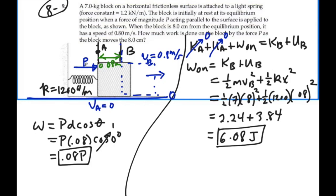So the total work done is 6.08 joules. And that is actually the work done by P because that is the only external force that is doing work as we move from A to B. So the work done is 6.08 joules.